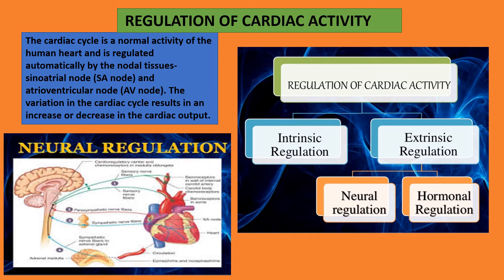First, I am starting with regulation of cardiac activity. The cardiac cycle is a normal activity of the human heart and is regulated automatically by the nodal tissues — the sinoatrial node (SA node) and atrioventricular node (AV node). The variation in the cardiac cycle results in an increase or decrease in the cardiac output.